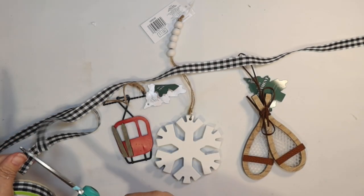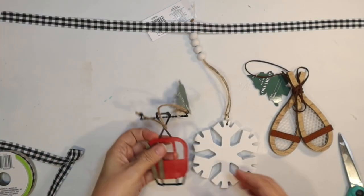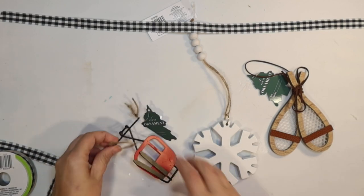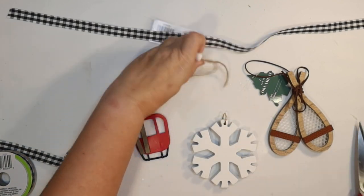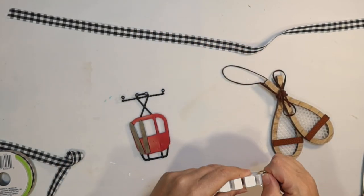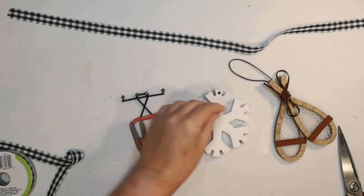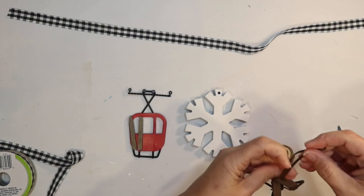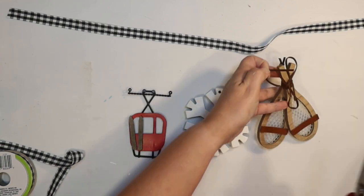Now our last DIY today is going to be a little banner. I got these great ornaments all at Target on clearance. They're all Christmas ornaments. I got a little ski lift, a snowflake, and some snowshoes. They all have completely different types of hangers though. So I'm trying to remove what they have so that I can give them like uniform hangers. And then I want to use that black and white buffalo check ribbon from the Dollar Tree.